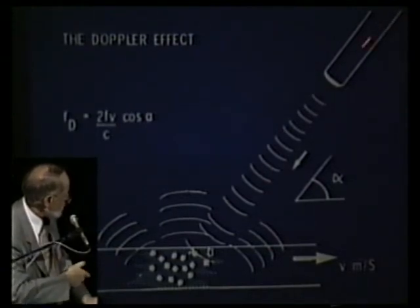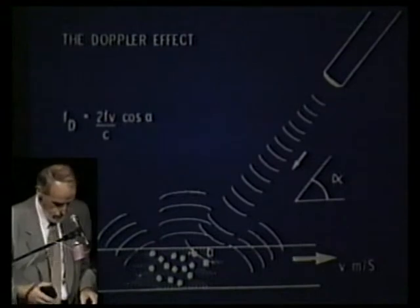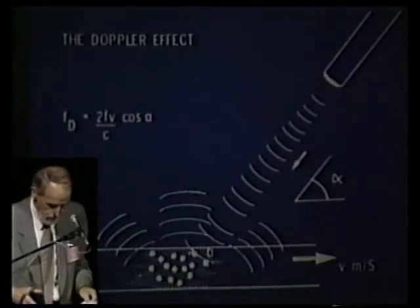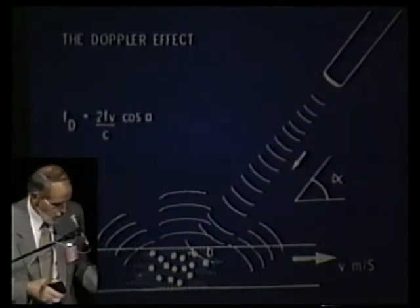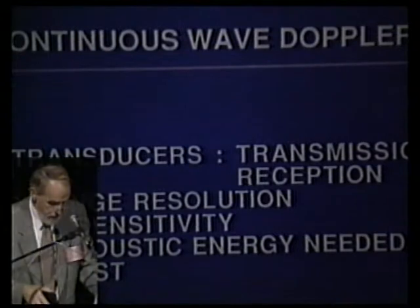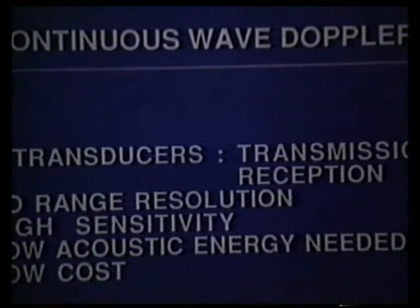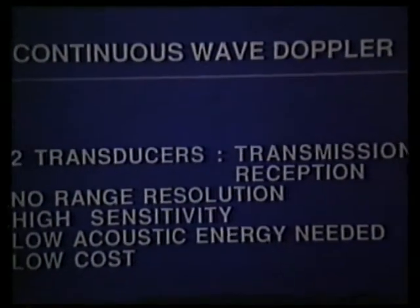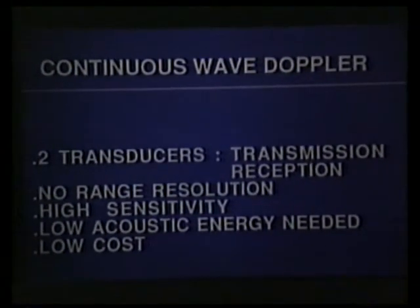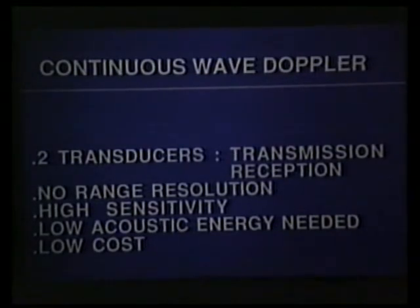Doppler instruments are of two types: the continuous wave instrument, which uses two separate transducers, and the pulsed wave instrument, which uses only one transducer for both transmission and reception.